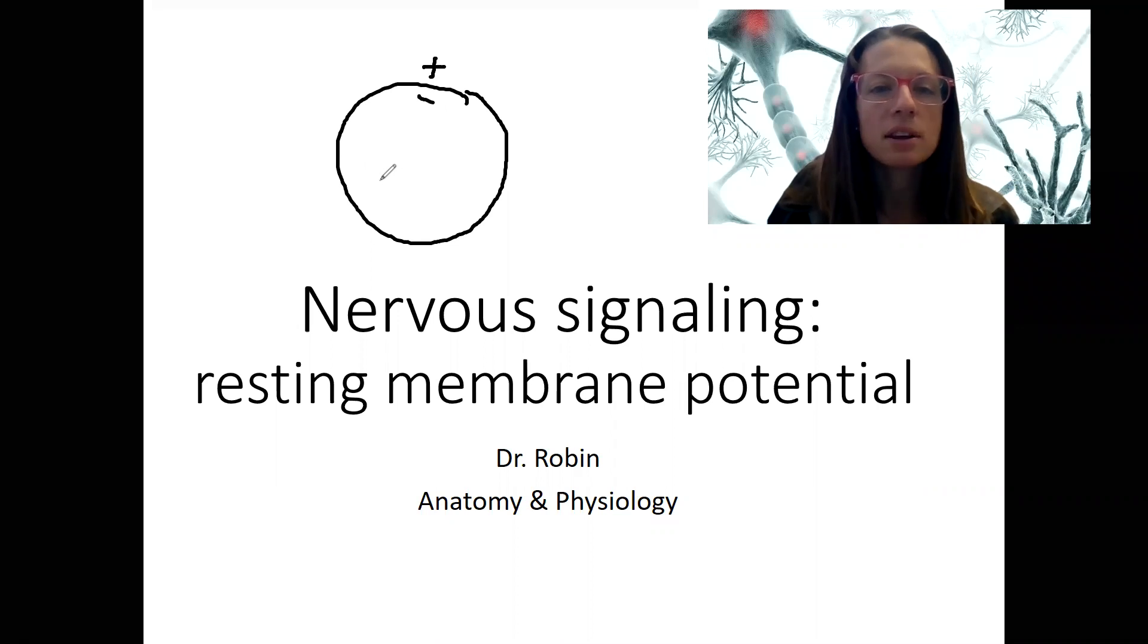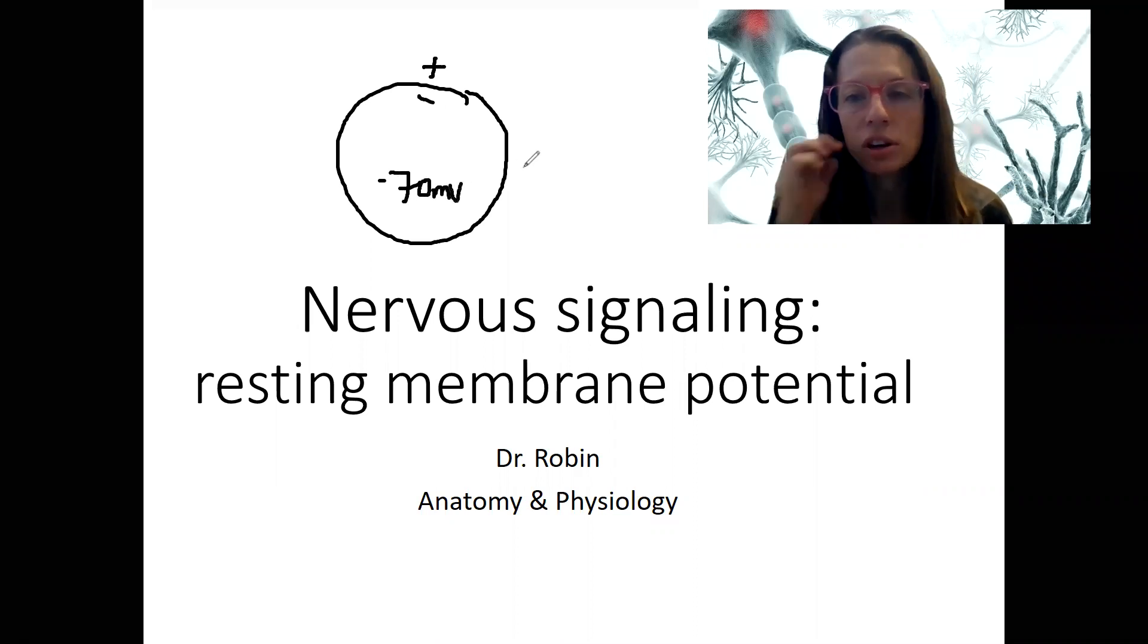So at rest, neurons are about minus 70. All cells are negative inside compared to outside, and you'll see some variation. Neurons are typically about minus 70.